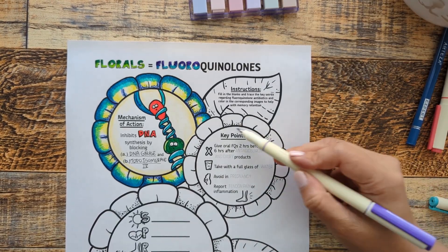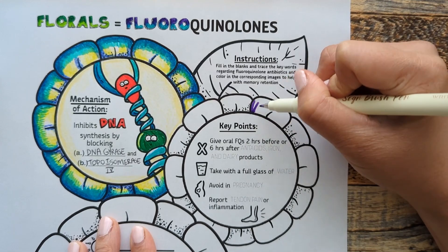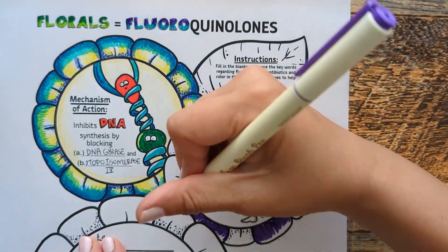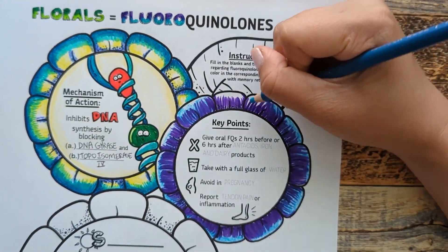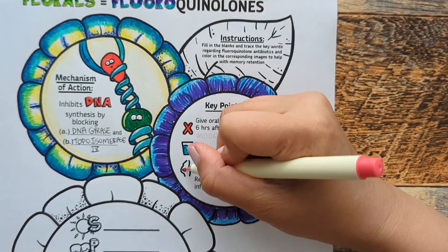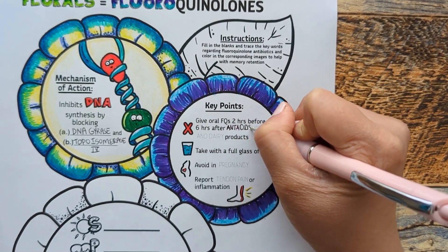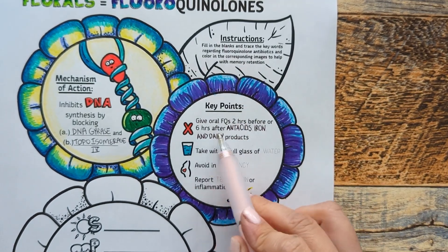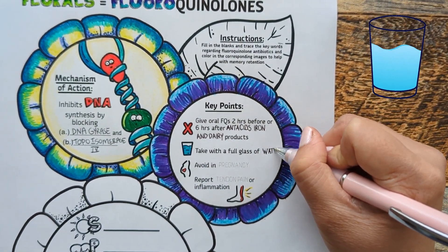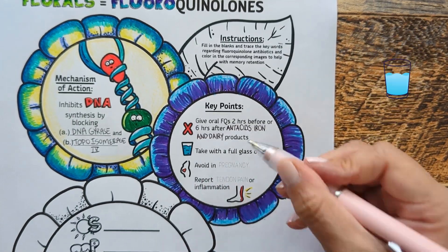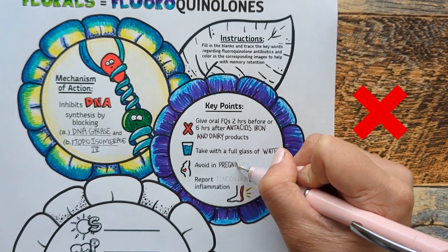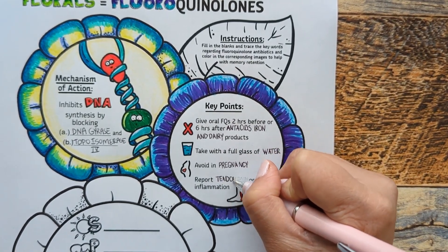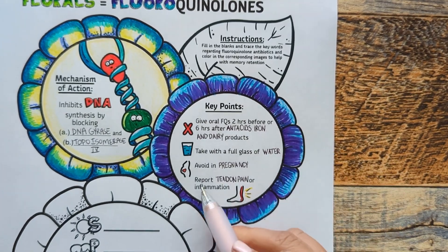Moving on to key points — let's color this flower in purple. P for purple, like P for points we need to remember. Avoid giving fluoroquinolones two hours before or six hours after antacids, iron, and dairy products, because they contain divalent cations that interfere with fluoroquinolone absorption. Take fluoroquinolones with a full glass of water to enhance absorption and decrease crystalluria. This class is teratogenic, so it should not be used in pregnant patients. There is also an FDA warning for tendonitis and tendon rupture, so educate patients to report tendon pain or inflammation.